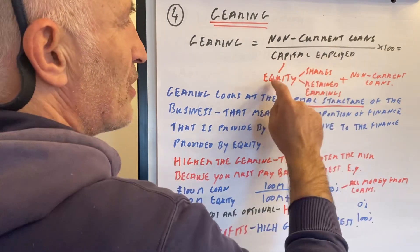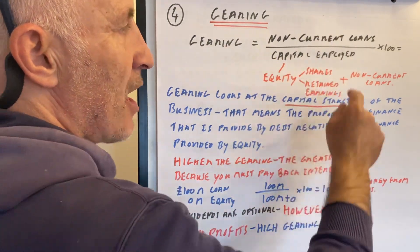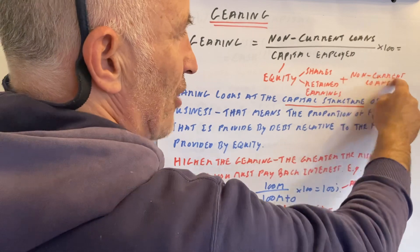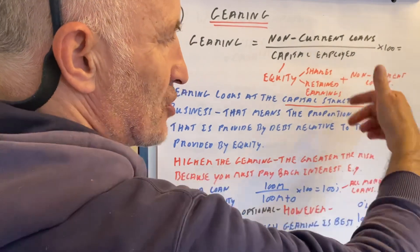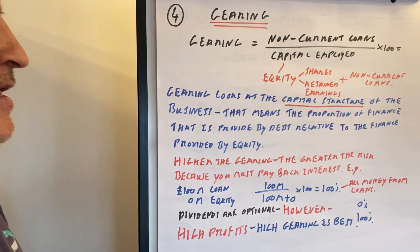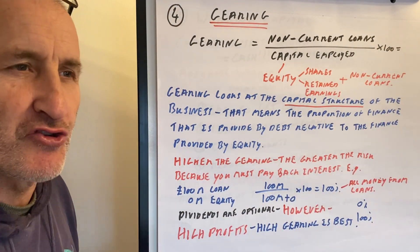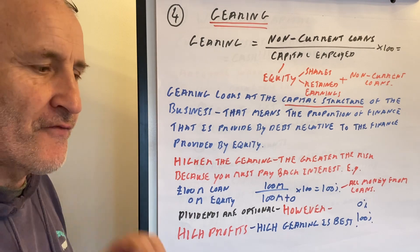Remember, capital employed is equity, shares, retained earnings, plus non-current liabilities or non-current loans.